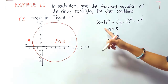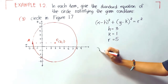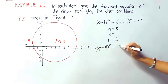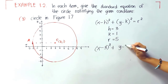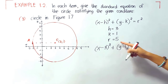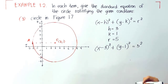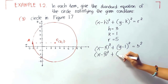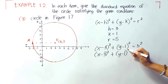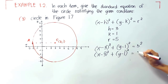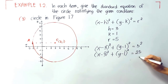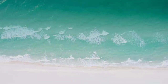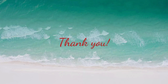Since we already have the needed values, let us now substitute: x minus h, where h is 3, quantity squared, plus y minus k, where k is 1, quantity squared, is equal to 5 squared. Let us rewrite that — 5 squared is equal to 25. And this will be our final answer. That is all for today. Thank you and see you on our next video lesson.